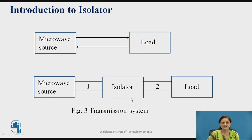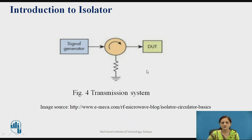If the isolator is placed between the generator and the load, the signal passes from the generator through the isolator towards the load side. Any reflection from the load side due to impedance mismatching is absorbed by the isolator. Here in this block diagram, the signal generator and load are connected at the two ports and the third port is terminated, so the isolator maintains one-way direction of signal flow.